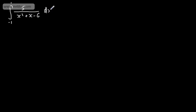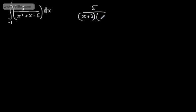Let's finish with one more and look at some limits. We've got the definite integral from minus 1 to 1 of 5 over (x squared plus x minus 6). This clearly isn't the derivative of the denominator. We factor the denominator to get 5 over (x plus 3)(x minus 2), and set up the identity a over (x plus 3) plus b over (x minus 2).